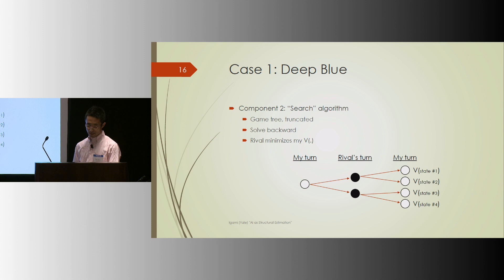The second element is a search algorithm, which is a procedure to find the best next move as a function of current state and the evaluation function. Deep Blue evaluates almost every possible board configuration, but within a finite number of turns, because you can't solve the whole game. That's just too large. Assuming that the opponent chooses, shares the same evaluation at the end, and would mechanically choose a move that would minimize my chance of winning or my value.